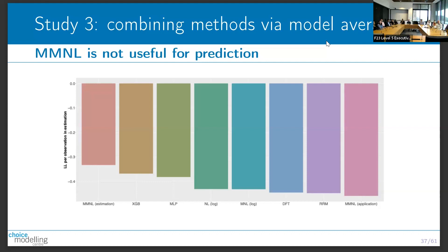Regarding mixed logit: in estimation it is the best - the best log-likelihood per observation - which is what we see when we do this on data. But mixed logit is the worst in application. We all use mixed logit to capture heterogeneity in travel time and cost sensitivity. But the reason it works well in estimation is we have multiple observations per person - we see multiple choices and integrate over a distribution. In forecasting we again need to integrate, averaging across draws, and we lose that advantage completely. The forecasts from mixed logit are really no different - and in this case actually worse - than MNL.